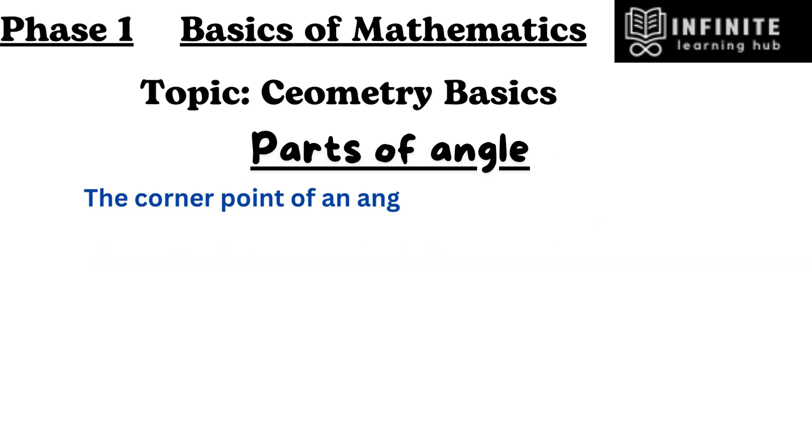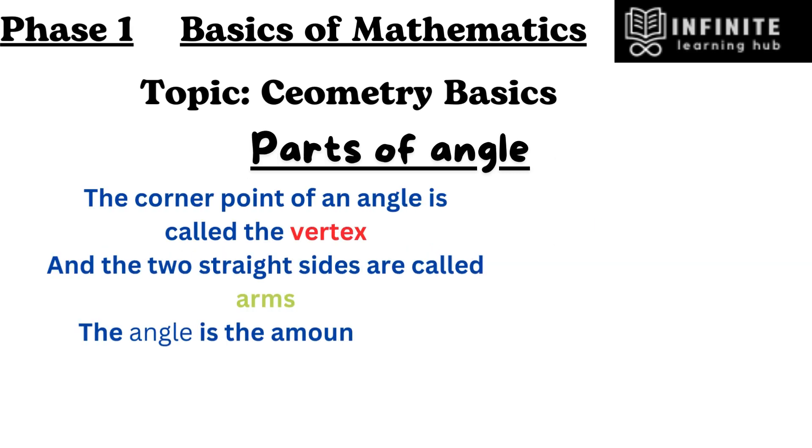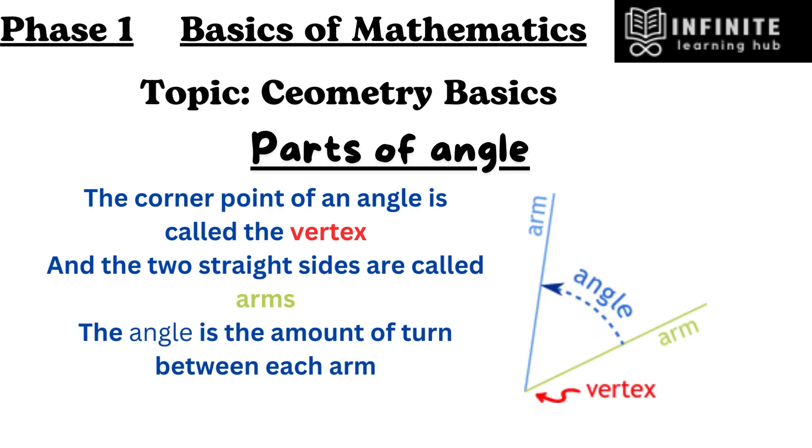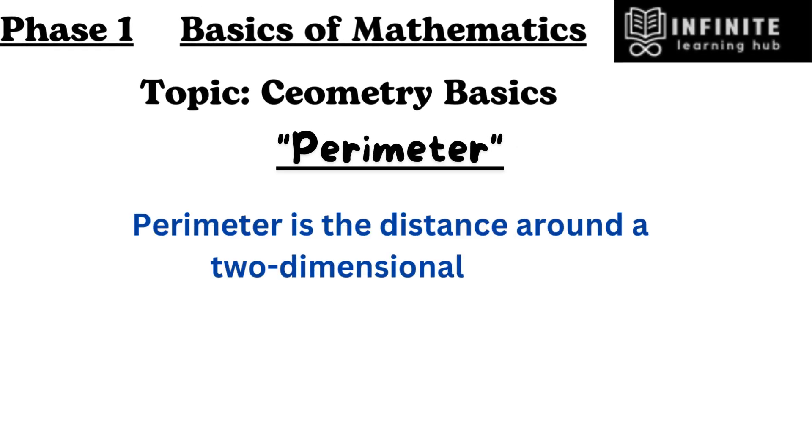The corner point of an angle is called the vertex, and the two straight sides are called arms. The angle is the amount of turn between each arm. Perimeter is the distance around a two-dimensional shape.